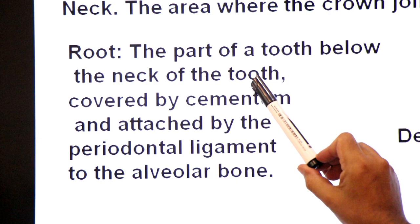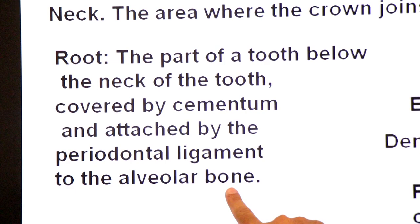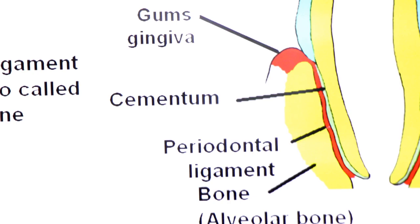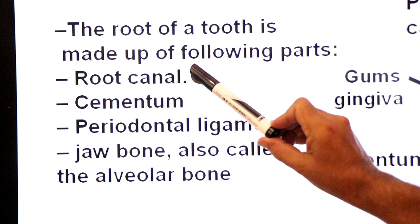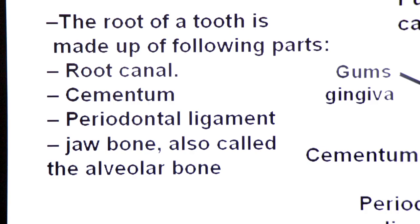The part of the tooth below the neck is covered by cementum, a connective tissue. It is anchored by the periodontal ligament to the alveolar bone — the bone which forms dental alveoli sockets. The root of the tooth is made up of the following parts: root canal, cementum, periodontal ligament, and jaw bone also called alveolar bone.